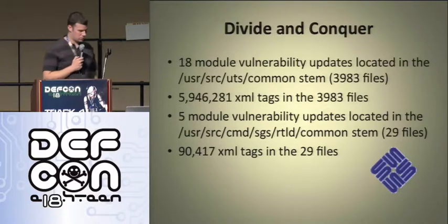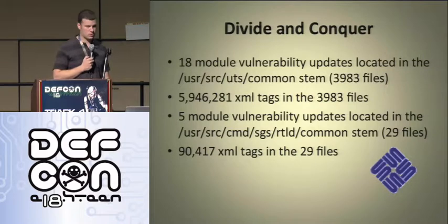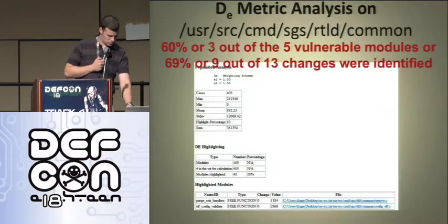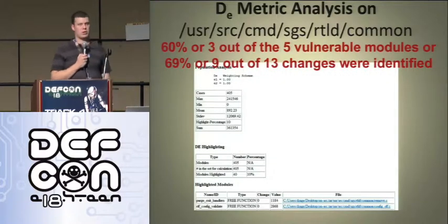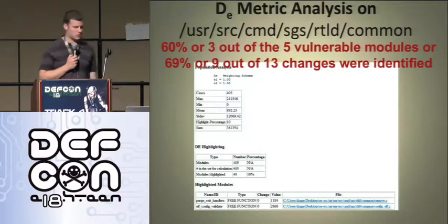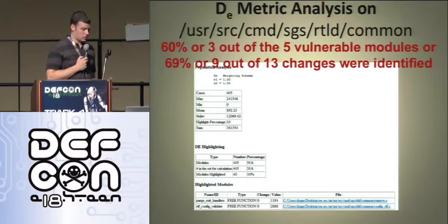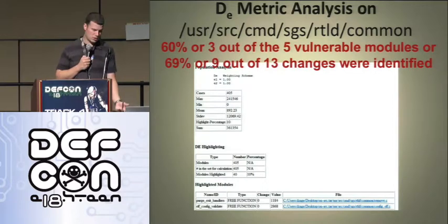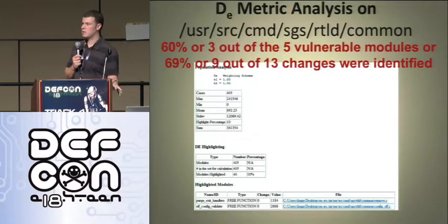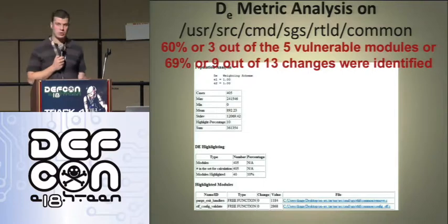Dolores wrote some code she calls her divide-and-conquer approach. There was a lot of weird stuff in there messing up her preprocessor engine, but once she got that working, we had 60% — three out of five vulnerable modules — and 69% — nine out of 13 changes identified. Not as good as our reliability numbers, but for a system that complex with that much code, still pretty good results.